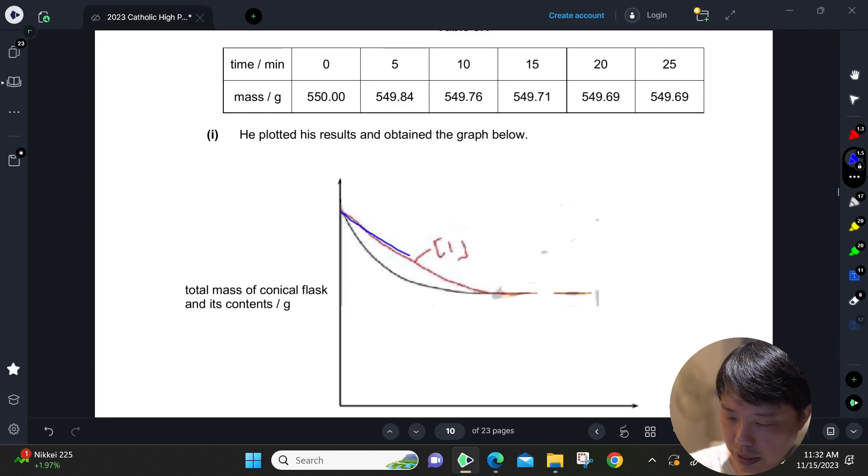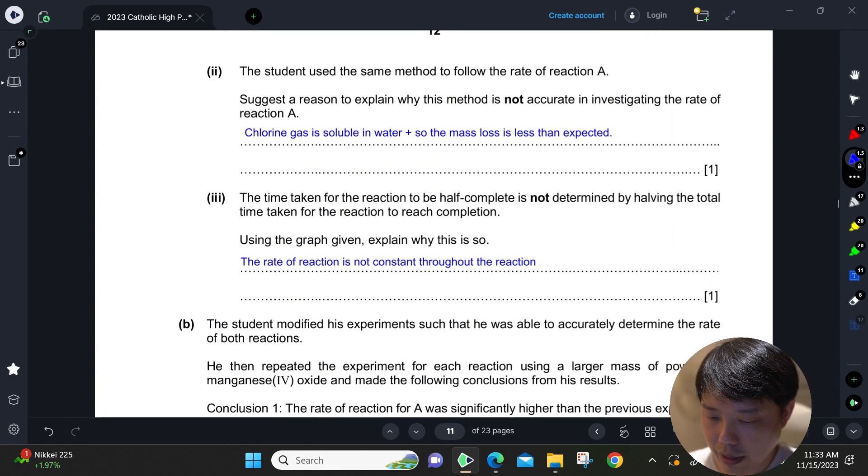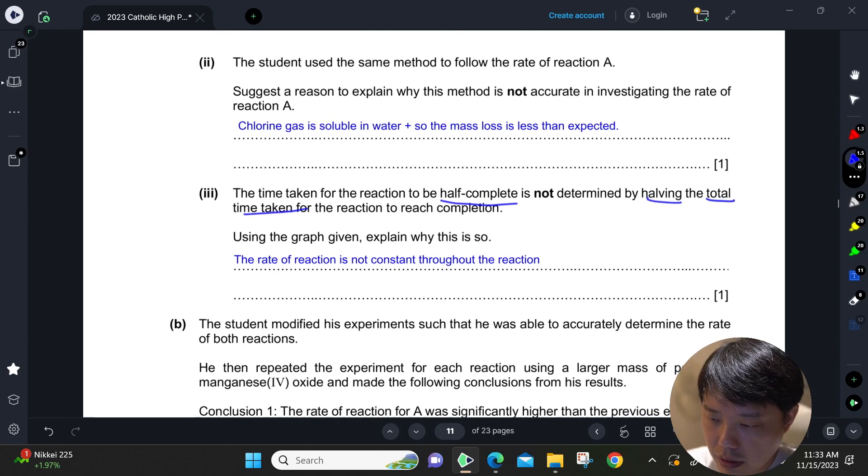As long as the gradient is constant, then halving the total time will give you a half-completed reaction. For our case, it is not so because the gradient is not a straight line.